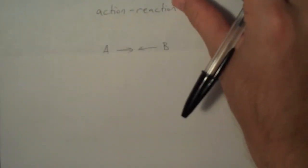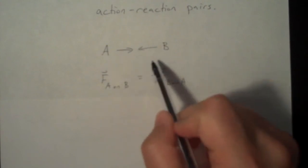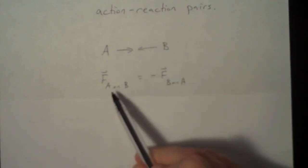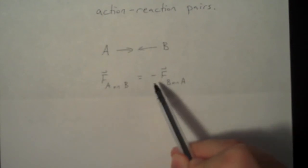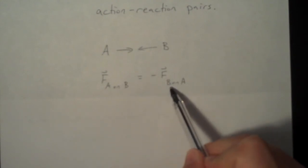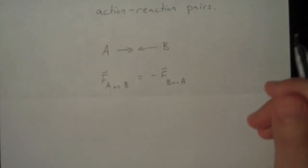Pictorially, what does that look like? Well, imagine that you've got two objects, A and B, pushing on each other. Well, the force of A acting on B is equal to the negative of the force of B acting on A. So forces always come in pairs.